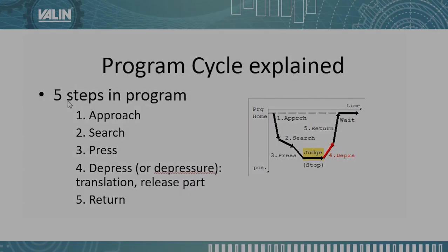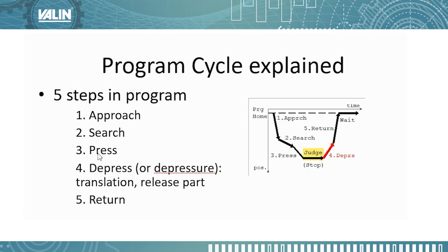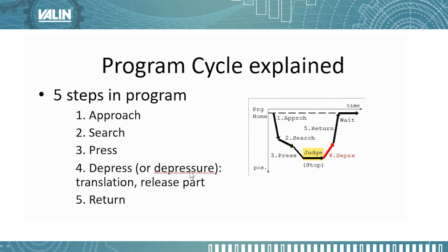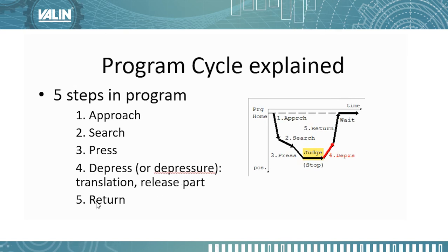There are five steps in the program: approach, search, press, and depress — also called depression or depressurization. It's documented differently in different parts of IAI's documentation. That's basically where you're going to release the part, and then the return.